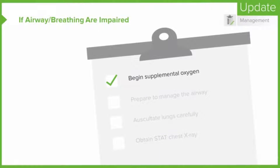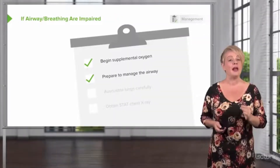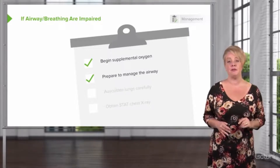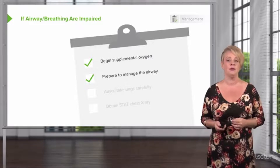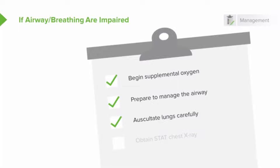Any time you suspect a problem with airway or breathing, the first step is to administer supplemental oxygen — this will help address hypoxia and hopefully reduce the work of breathing. You want to be ready to manage the airway; not every patient needs to be intubated right away, but you want the necessary equipment, medications, and personnel available. You want to auscultate the lungs — auscultation can help tell you why there's a problem and narrow your differential. A wheezing patient is managed differently than one with crackles or unilaterally absent breath sounds. And lastly, get a stat chest x-ray for any patient with respiratory distress to better understand what's going on physiologically.